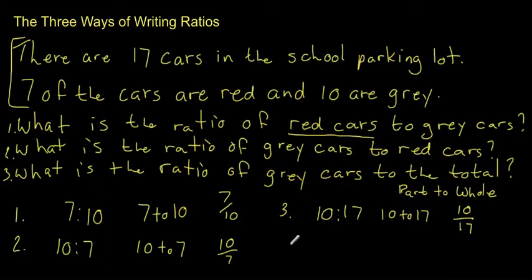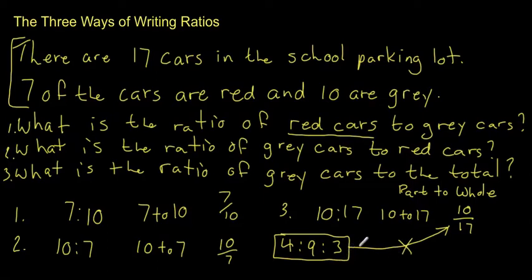Now, the only thing you have to remember is that if you have a ratio which involves three whole numbers, like for example four, nine, and three, you cannot write this type of a ratio as a fraction. Because you can't have three numbers in a ratio. So the only time that you can write a ratio as a fraction is when you have only two whole numbers being compared.